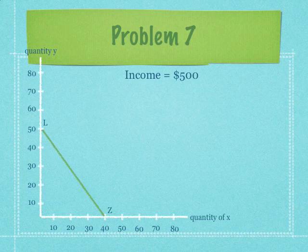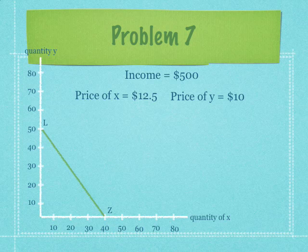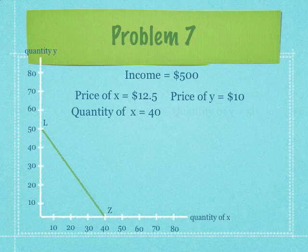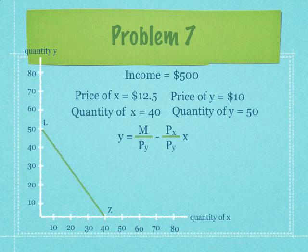Let's review: income equals $500, price of x equals $12.50, price of y equals $10, quantity of x equals 40, quantity of y equals 50. The actual equation for this line is y equals the income divided by price of y minus the price of x divided by price of y times x. I proved that equation and showed you the steps in a previous lecture.